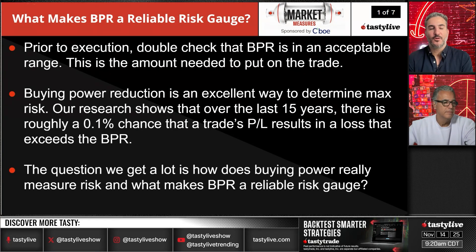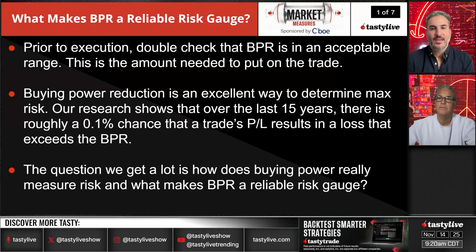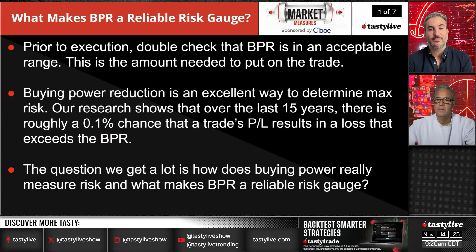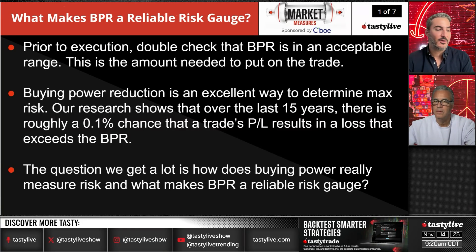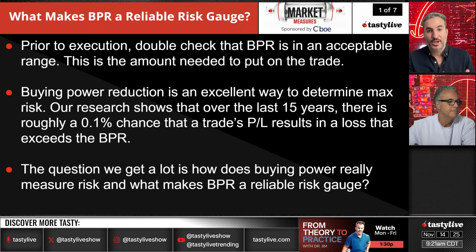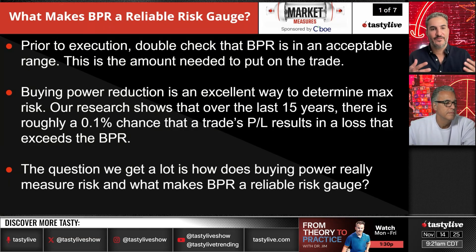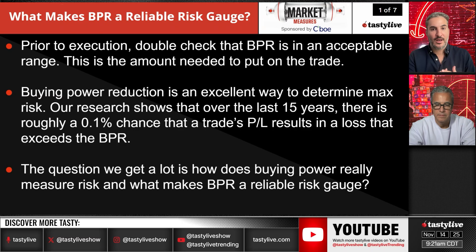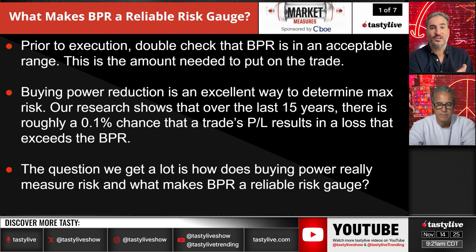Prior to execution, double-check that buying power is in an acceptable range — this is the amount needed to put on the trade. In a margin account, a rough way to determine buying power on a position is roughly 20% of the notional value of the put side. So if you sell a 100-strike put, you typically use around $2,000 in buying power to hold that position. It can change based on volatility, duration, and time on that option — with volatility being the biggest component — as well as the relative price of the underlying.